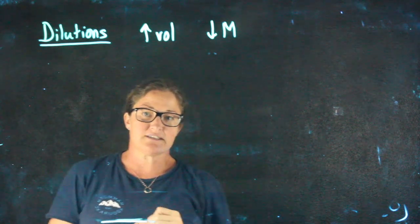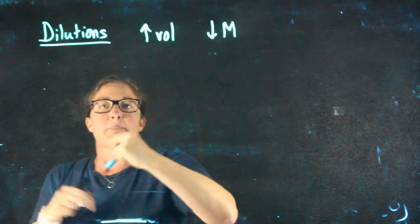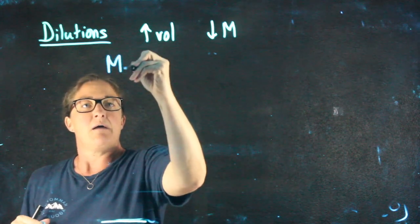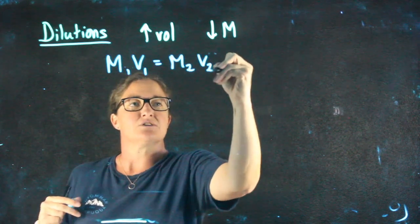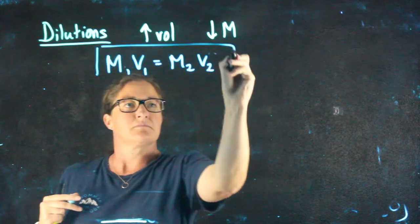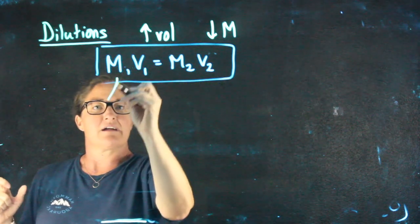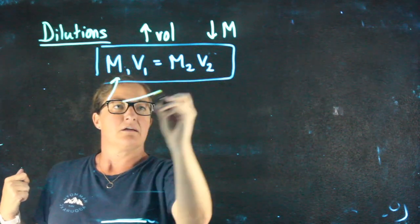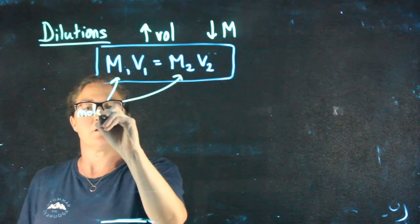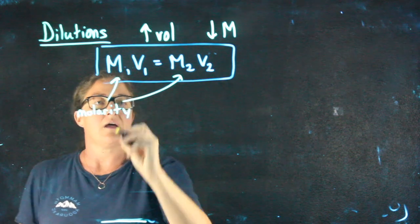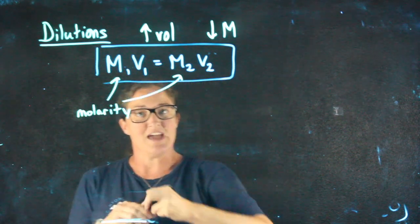The way that we approach dilutions in this class is we use this formula: M1V1 equals M2V2. M1 and V1 are the molarities at the beginning and the molarities at the end. V1 and V2 are the volume at the beginning and the volume at the end.